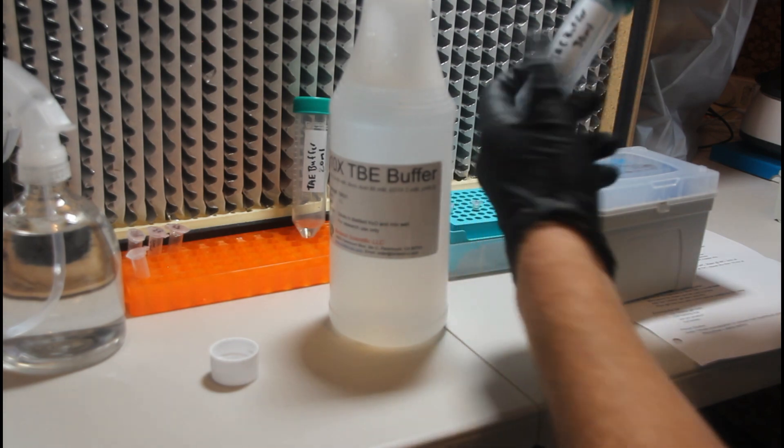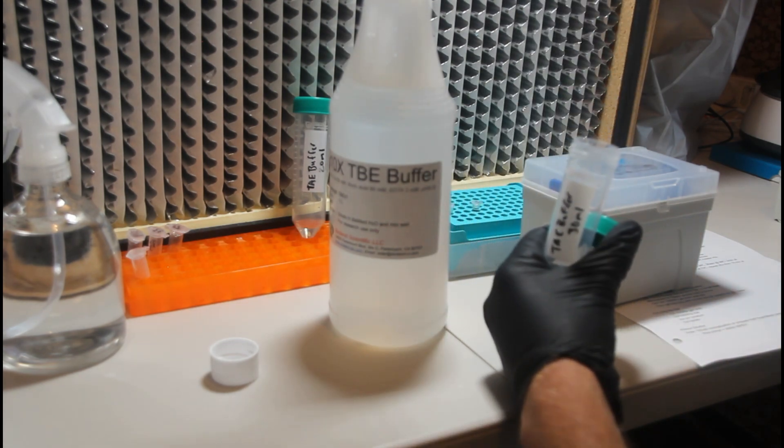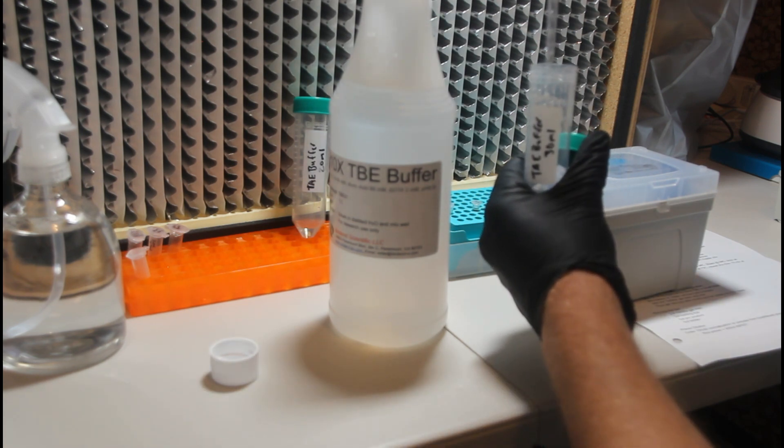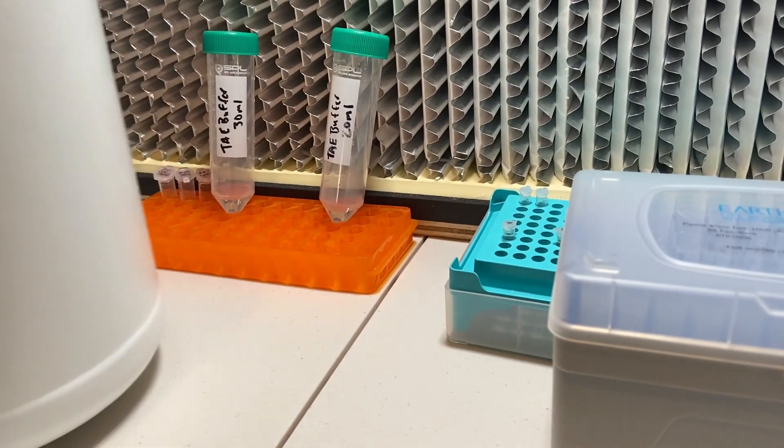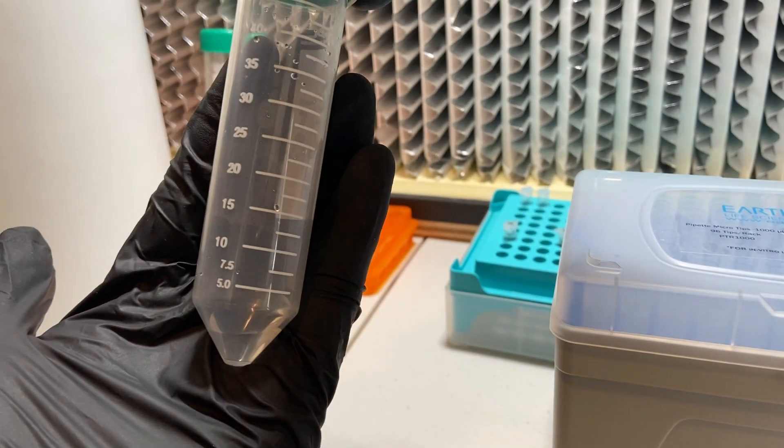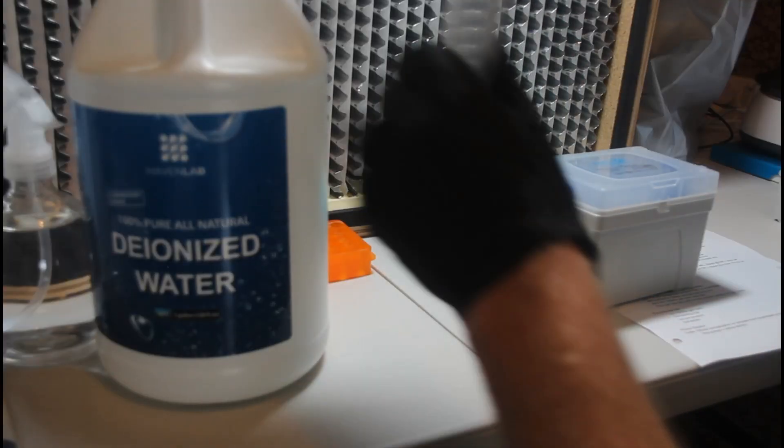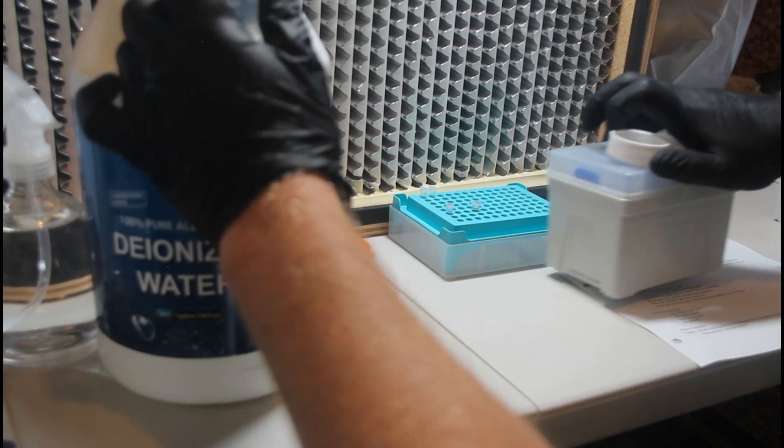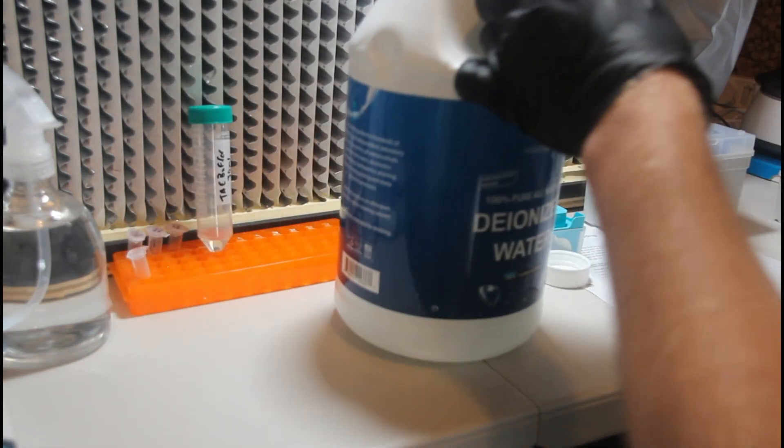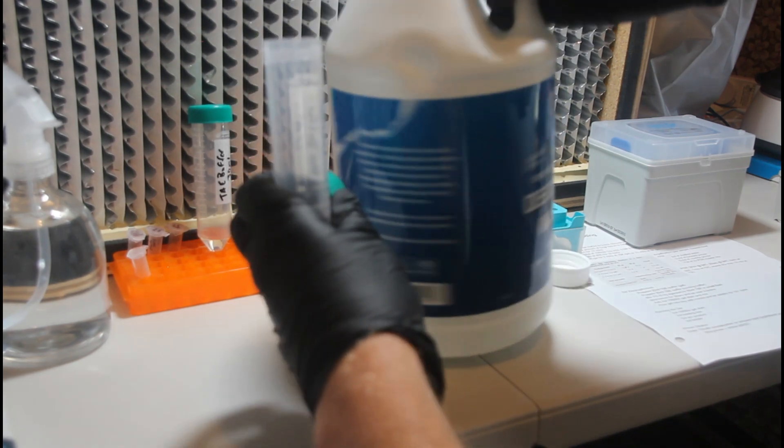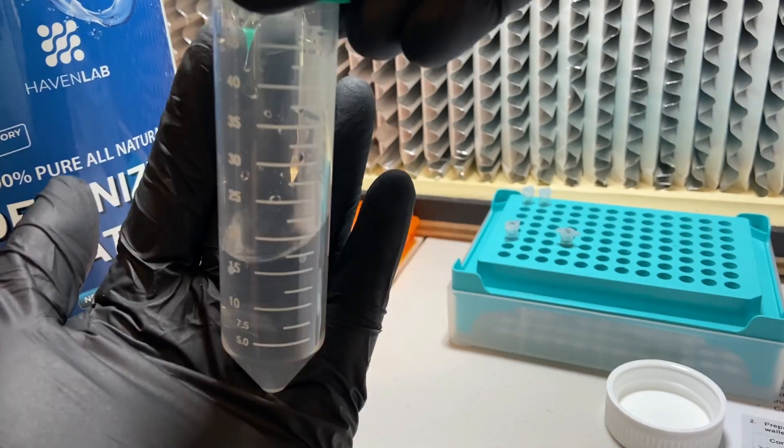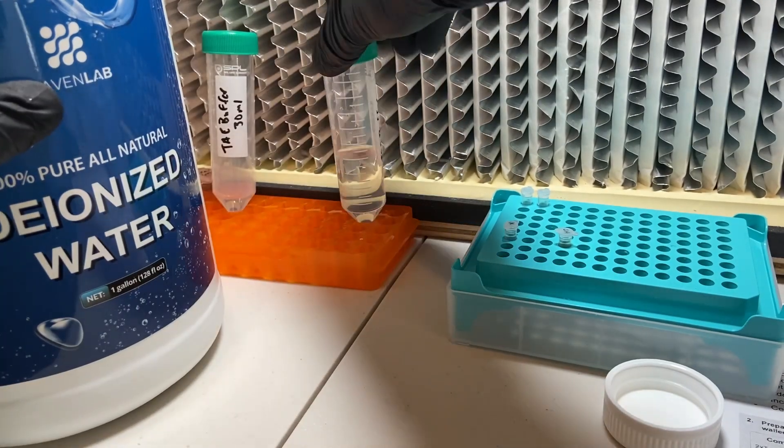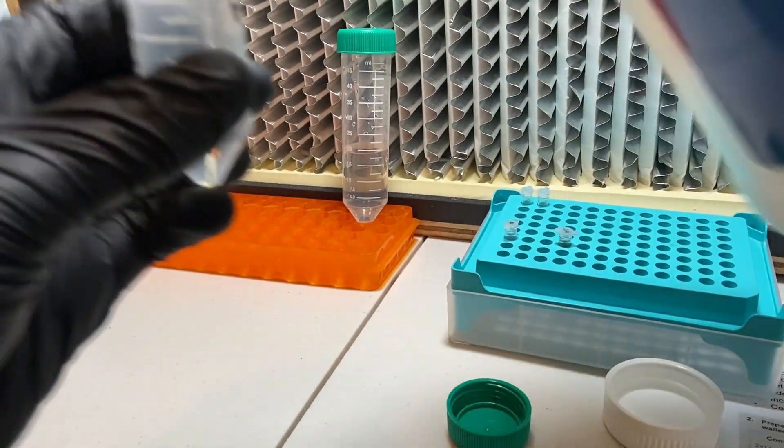To create the 20 milliliter 1X TBE buffer that we need for the gel, we'll just repeat the process, but we'll use 2 milliliters of the 10X TBE buffer, and then we'll fill up a separate falcon tube to the 20 milliliter mark with deionized water or distilled water, either one would be fine. Make sure that when you are creating your TBE buffer solution from a stock concentration, that you double check that your concentrated buffer is very well mixed.